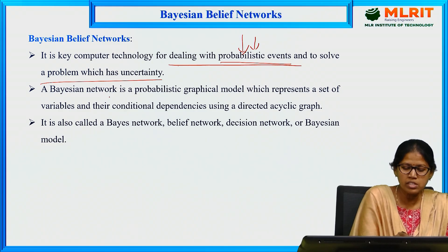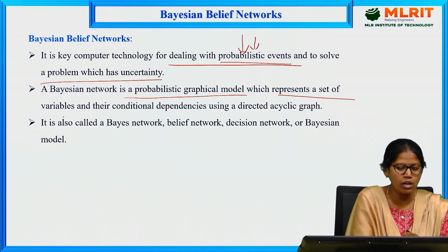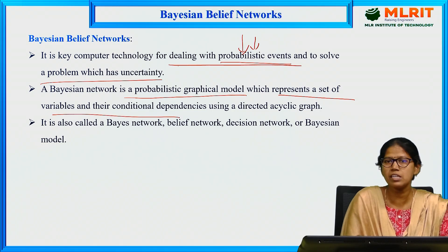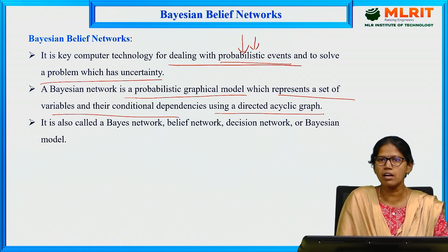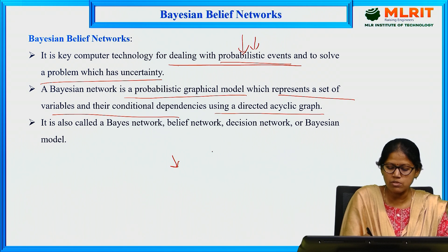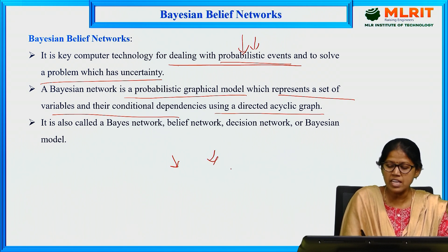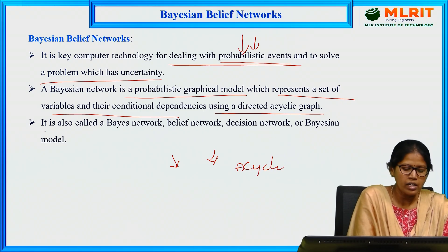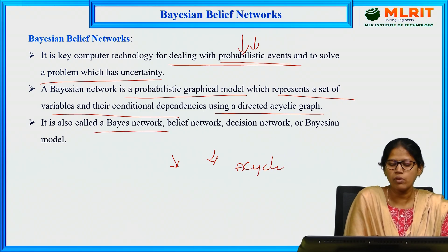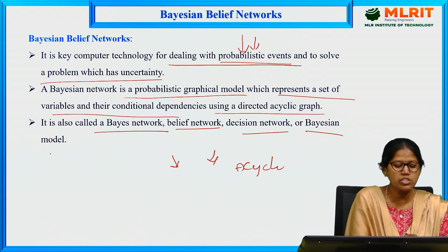A Bayesian network is a probabilistic graphical model which represents a set of variables and their conditional dependencies using a directed acyclic graph. There are directions in the graph and it is acyclic, meaning no cycles form in the graph. It is also called a Bayes network, belief network, decision network, or Bayesian model.